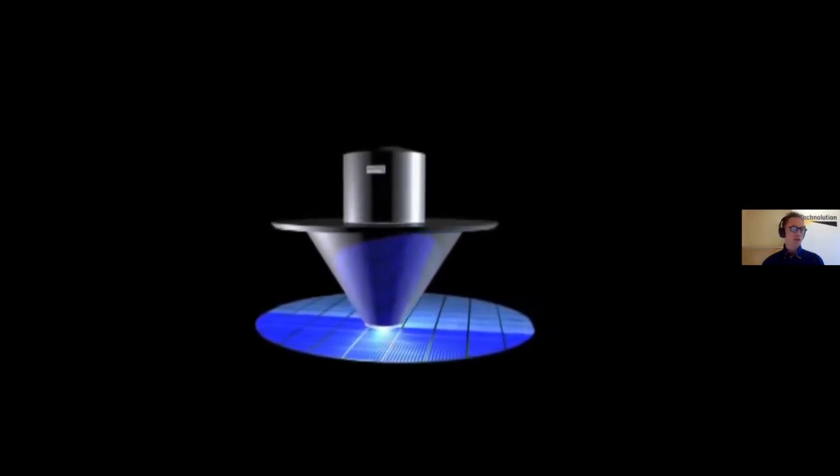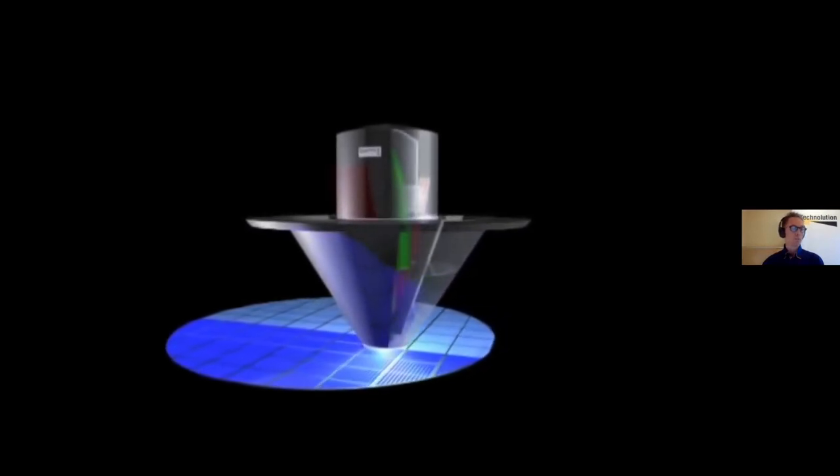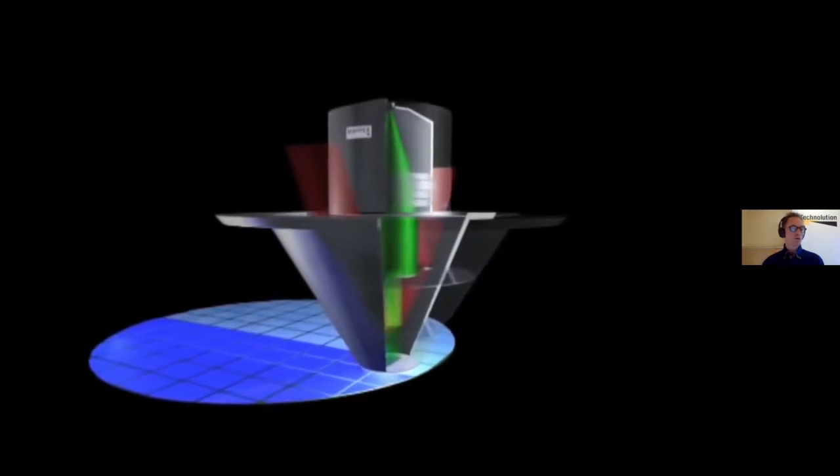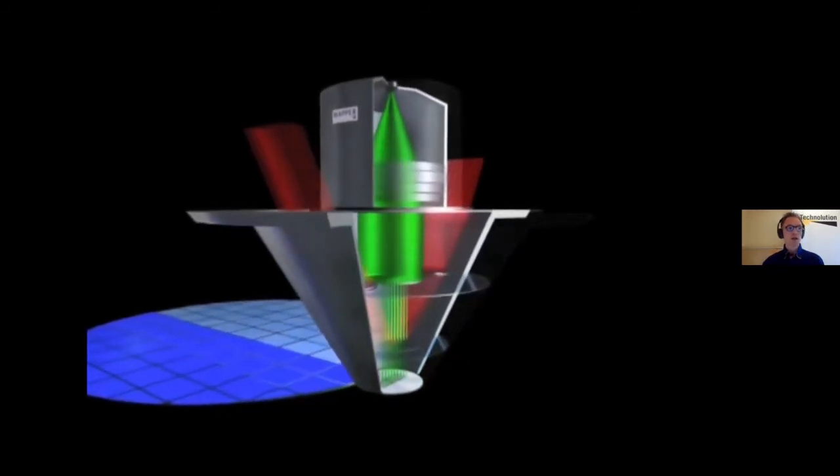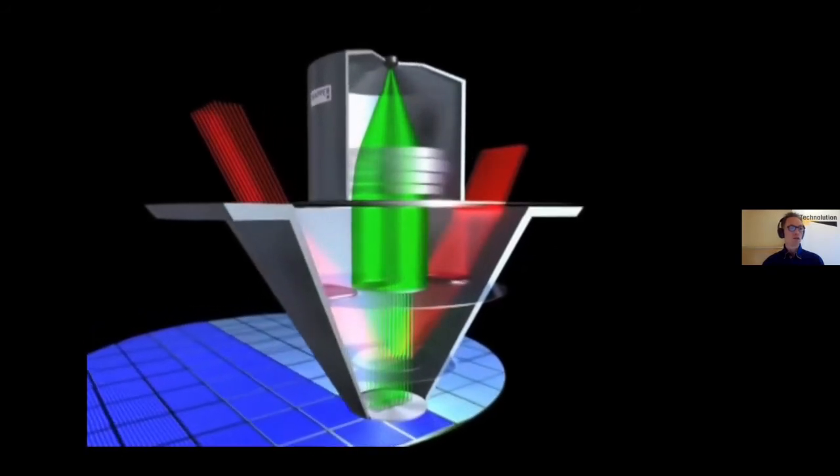As we move into the next viewpoint, the internals of the print head become visible. On the top, you see the green electrons being generated, just like in an old television. The electron beam is split into 13,000 individual beams.